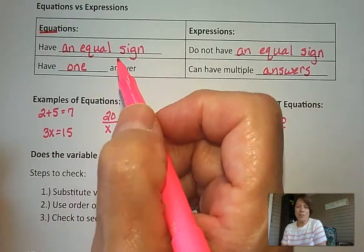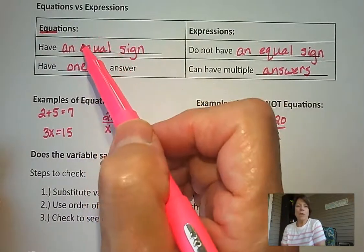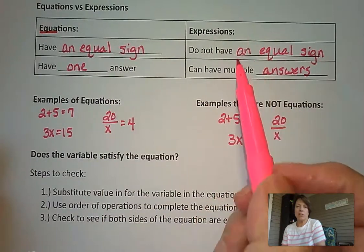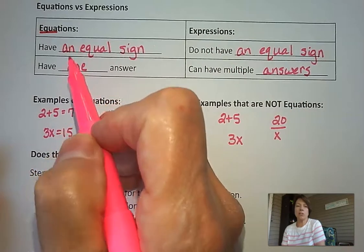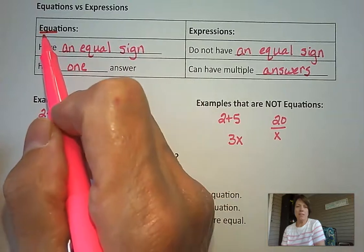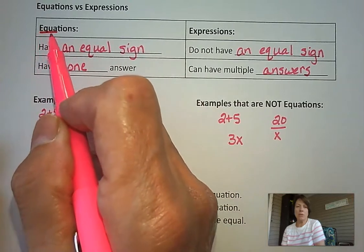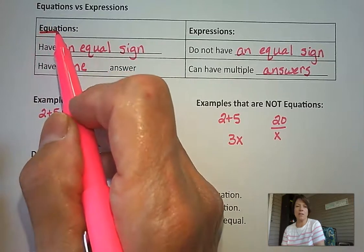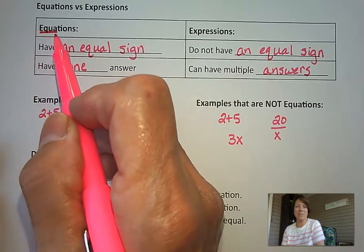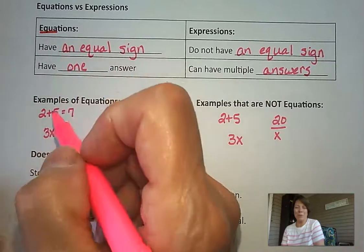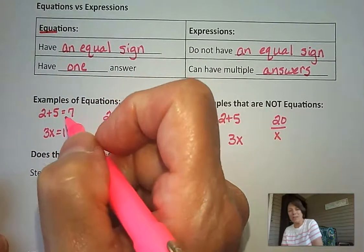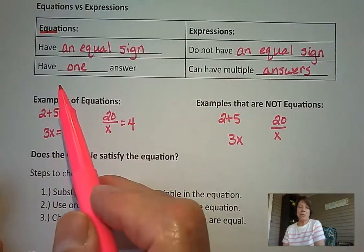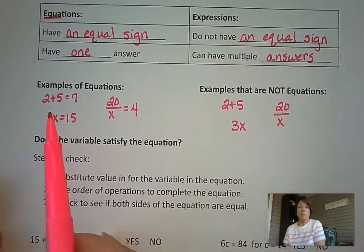Now let's look at our equations. We know that expressions do not have an equal sign, but equations do have an equal sign. You can see the word equal, E-Q-U-A, the prefix right here in equation is the same as the prefix in equal. So maybe that'll help you remember equation equal sign. And algebraic equations are going to have one answer.